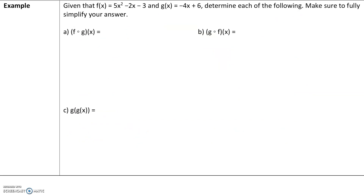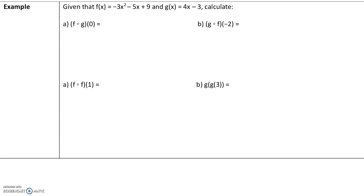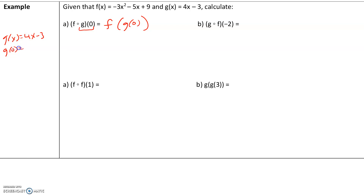Let's do one more. We will find f composed with g of 0, meaning f of g of 0. For g of 0, taking g of x equals 4x minus 3 and replacing x with 0, we have 4 times 0 minus 3, which is 0 minus 3, or negative 3. So g of 0 has a value of negative 3.